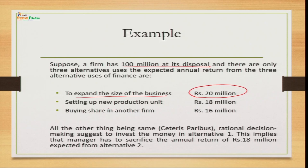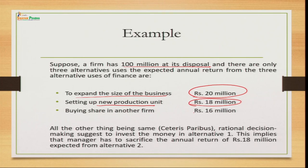The third alternative: they can buy shares of another company, with an expected return of 16 million. These are the three alternatives available to the firm and their expected returns. Now keeping everything constant — ceteris paribus — if we decide rationally, we will choose the first alternative because it gives the maximum return compared to the others.